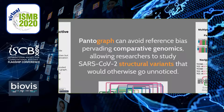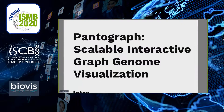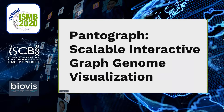A pangenome models the full set of genomic elements in a given species or clade. In the form of graph genomes, they naturally express genome rearrangements, avoiding the reference bias problem which pervades classical reference-based views. This means that Pantograph allows researchers to browse the entire genetic diversity in a SARS-CoV-2 population that would otherwise be underestimated. Please don't miss Josiah Seaman's Pantograph talk in BioViz if you're interested in a more in-depth explanation of the reference bias problem.